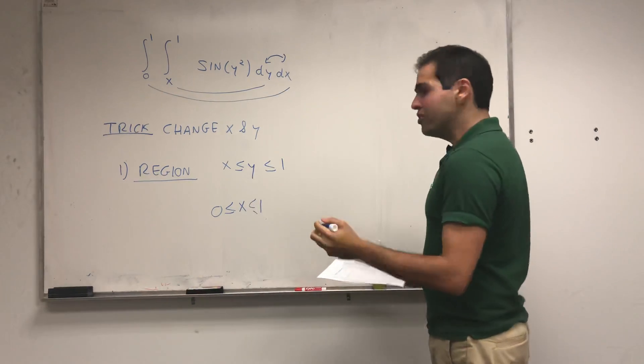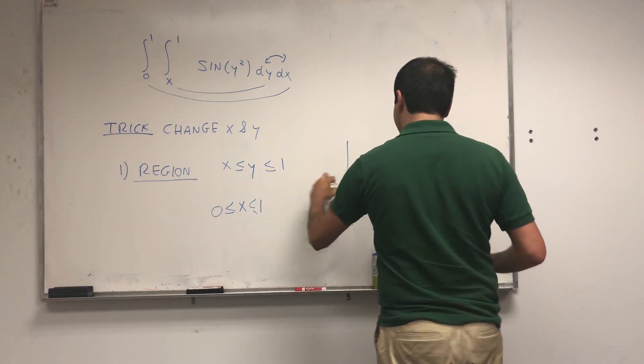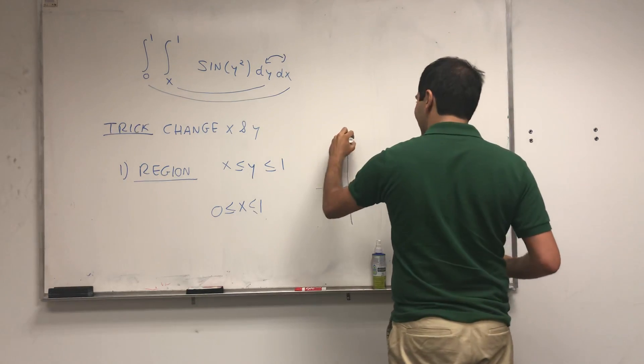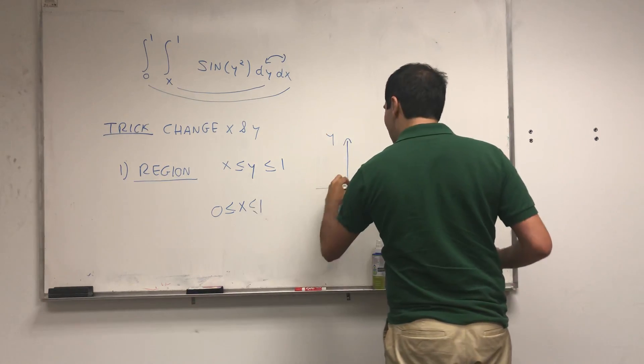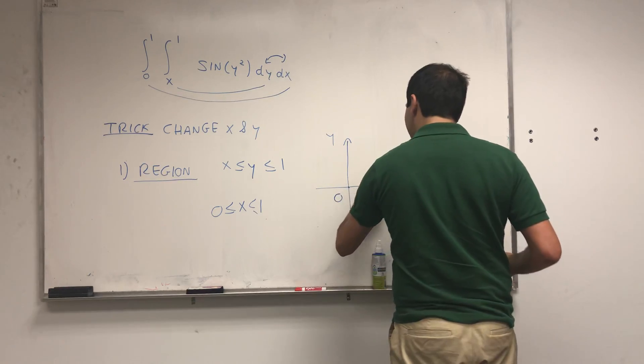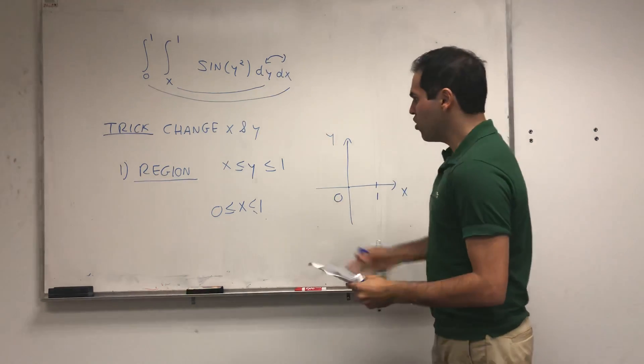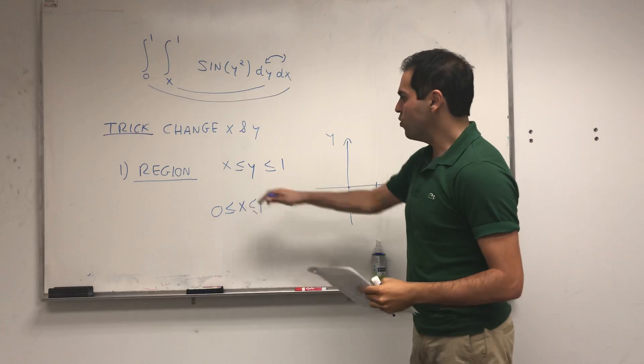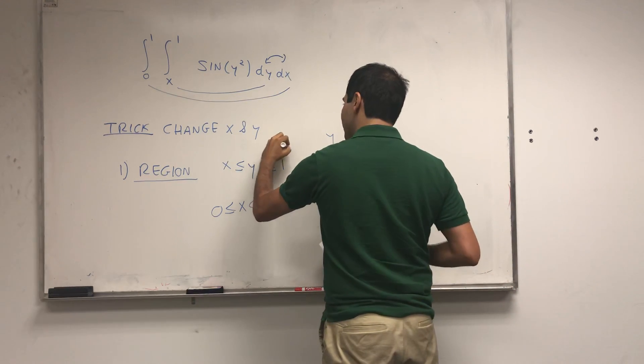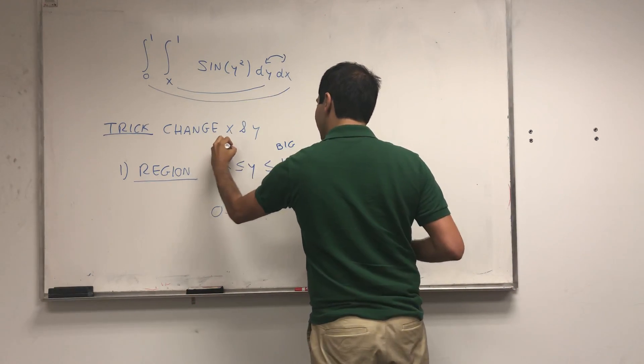And now, let us draw this in a 2D plane. So, this is x and y, and we know that x is between 0 and 1, and moreover, what this says is that y is squeezed between a bigger function and a smaller function.